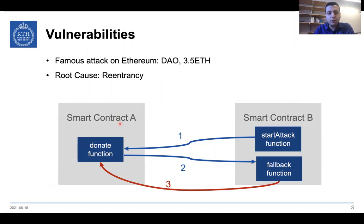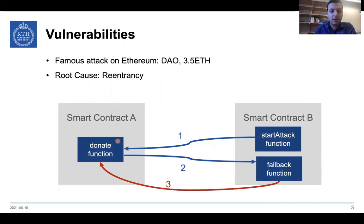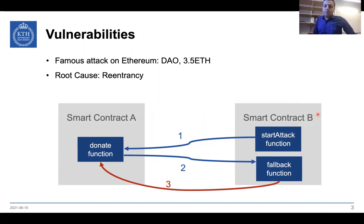In the example we have here, we have two smart contracts, smart contract A and B. Smart contract A is the victim. Smart contract B starts the attack by calling its own function, which also calls a function called donate in smart contract A. The donate function tries to send some specific amount of Ether to smart contract B. But since smart contract B has no specific function for this purpose, after receiving the Ether, the fallback function is going to be invoked, and in the fallback function there is an attack.